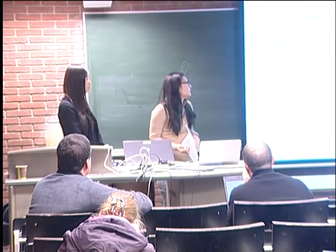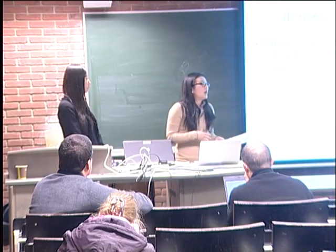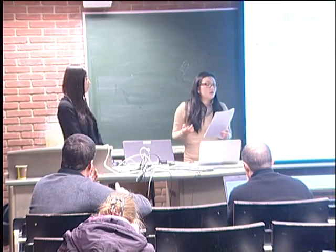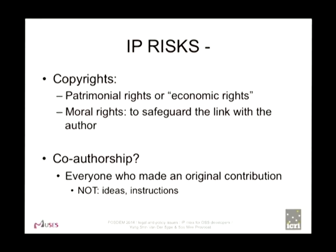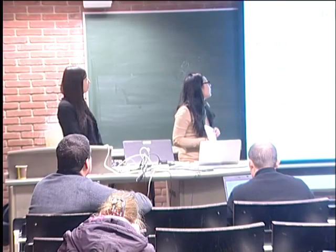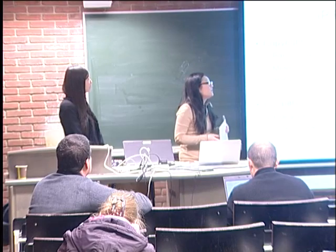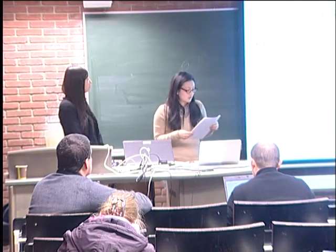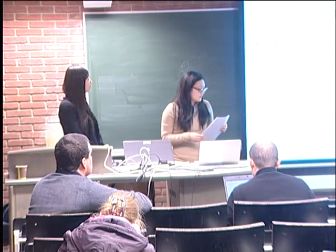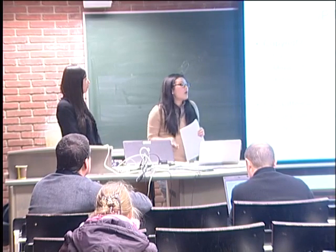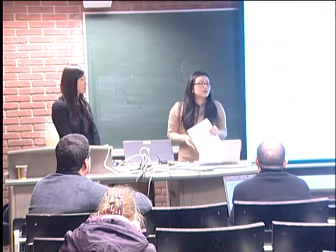A lot of open source licenses will have a provision on how derivative rights work. The set of copyrights cover patrimonial rights or economic rights and moral rights. Moral rights want to safeguard the link with the author, whereas economic rights allow you to exploit your work. In case of joint authorship — which is typical for open source projects — those rights will belong equally to all the authors unless you have agreed otherwise.